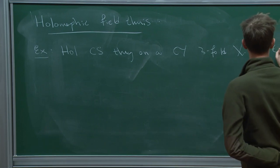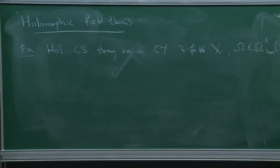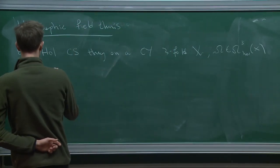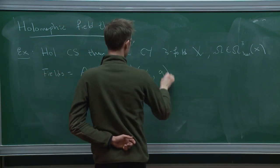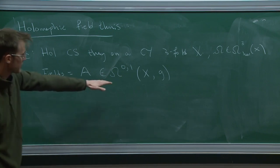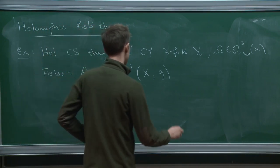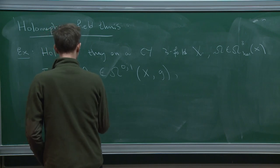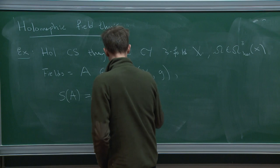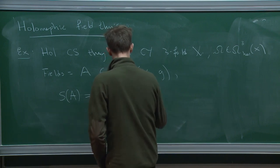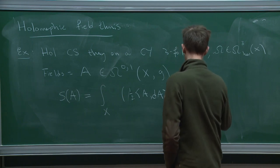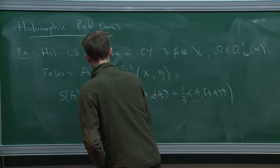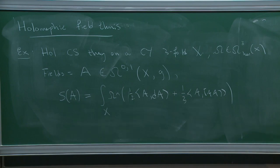Let omega be the non-vanishing holomorphic top form. The fields of holomorphic Chern-Simons are just 0,1-forms on X with values in some Lie algebra G — very similar to Chern-Simons, except I'm not looking at all 1-forms, just 0,1-forms. The action is very familiar: I take the ordinary Chern-Simons action, (1/2) A dA + (1/3) A bracket AA, and wedge with the holomorphic three-form. Here I've chosen a non-degenerate pairing on my Lie algebra G, just as in Chern-Simons.